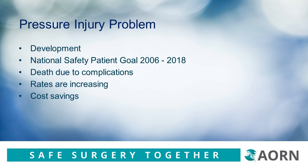Pressure injury development happens when bony prominences under the layers of tissue create constant pressure for sustained duration. This causes tissue ischemia, loss of circulation, and therefore decreased nutrients and oxygenation to those tissue layers. Eventually, tissue necrosis occurs due to the intensity and unrelieved pressure.